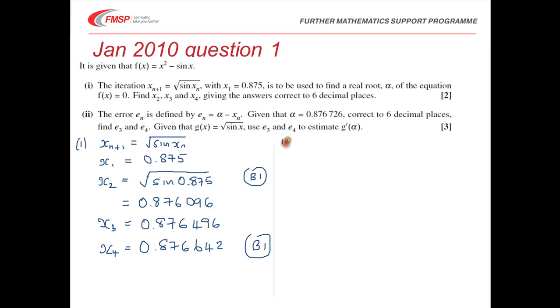When we move on to part 2, we have e_n is equal to alpha minus x_n. And we're given the value of alpha here.